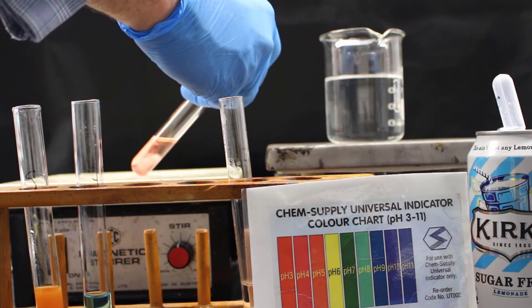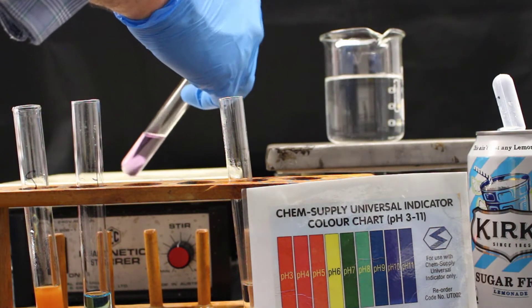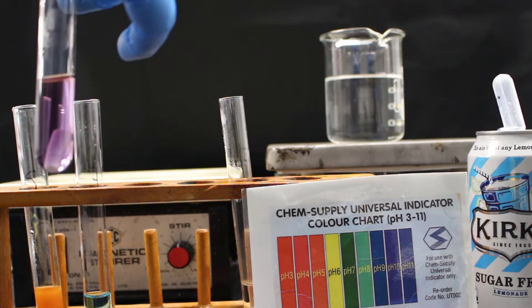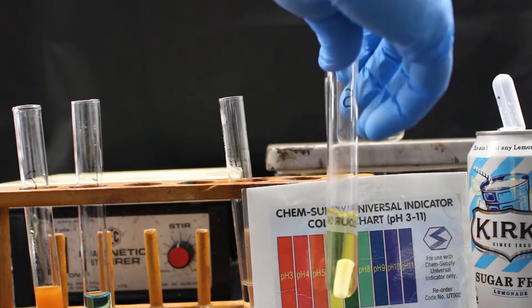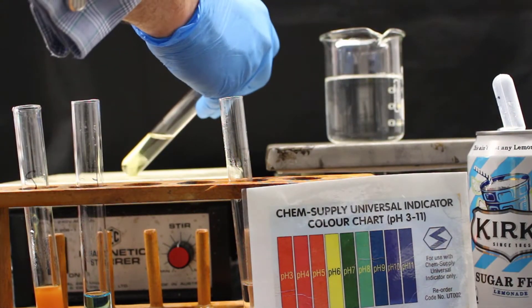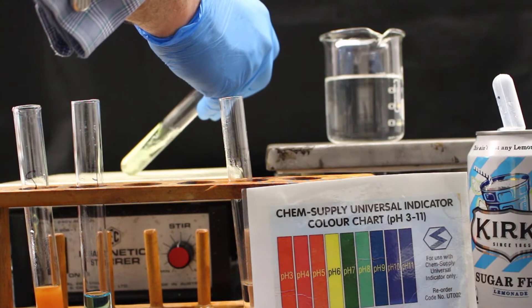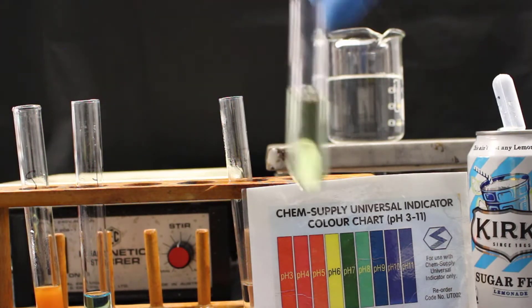We're aiming to change the color of the indicator from the red color, which indicates an acid to green, which indicates that it's a neutral. And it's a matter of just going back and forth, checking the color until we've got green.